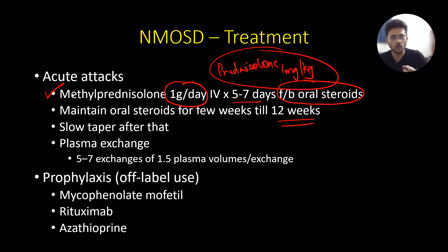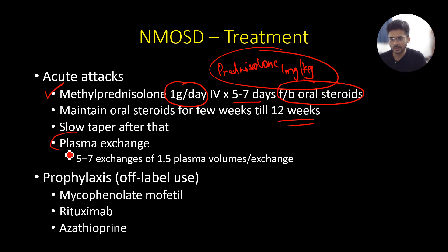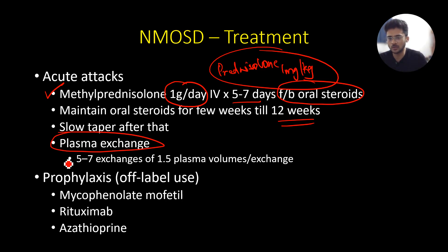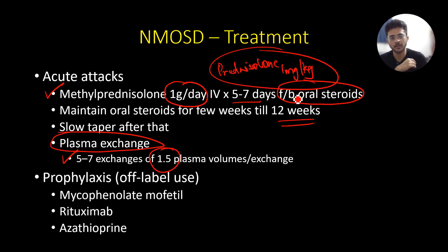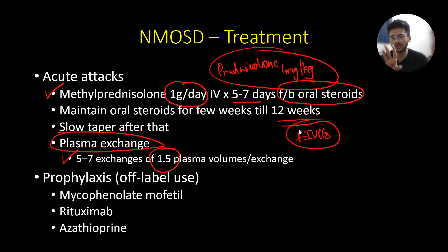Have a low threshold to start plasma exchange. If the patient is not responding to steroids within the first one or two days, plan for plasma exchange in a parallel fashion. Usually 5 to 7 exchanges of 1.5 plasma volumes per exchange. If both steroids and plasma exchange are not working, you may have to try IVIG, but steroids and plasma exchange are the main treatment modalities for an acute attack.